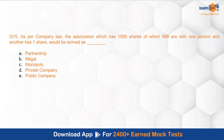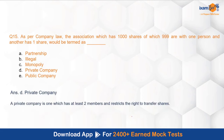The next question asks: as per company law, an association which has 1,000 shares, of which 999 are with one person and another person holds one share, would be termed as which type of organization? The correct option is D — a Private Company — which is a company that has at least two members and has a restriction on the right to transfer of shares.